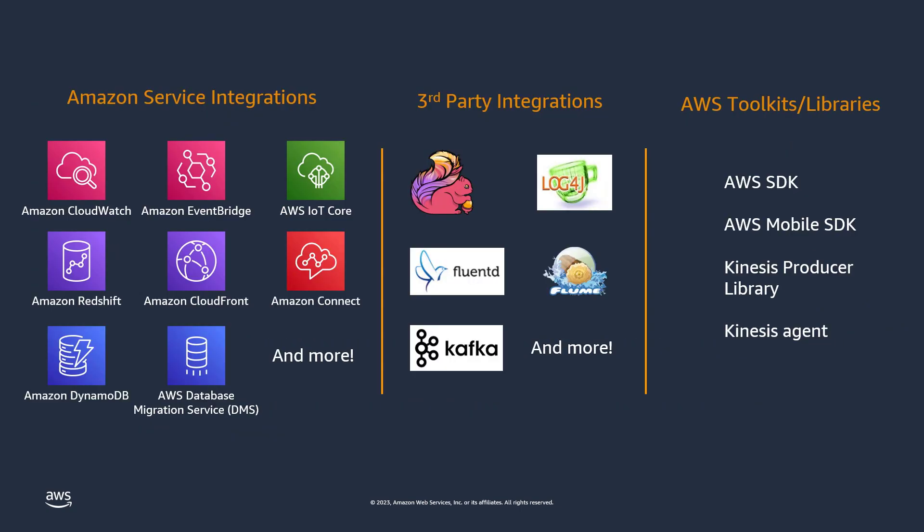To meet customers' data streaming needs, Amazon Kinesis Data Streams provides three ways to build data producers. Amazon Service Integrations enable customers to build streaming data use cases across a variety of data source types. Some of these, such as Amazon EventBridge, can act as both a data producer and data consumer for Kinesis Data Streams.